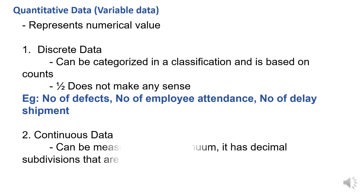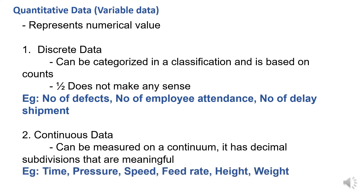Now, continuous data. We can measure on a continuous scale over different kinds of measurements. The main difference between continuous data and discrete data is that decimal subdivision is meaningful in continuous data. For example: time, pressure, speed, feed rate, height, weight. One example is time — 1 hour equals 60 minutes, and 60 minutes equals 360 seconds. So decimal subdivision is meaningful in continuous data.